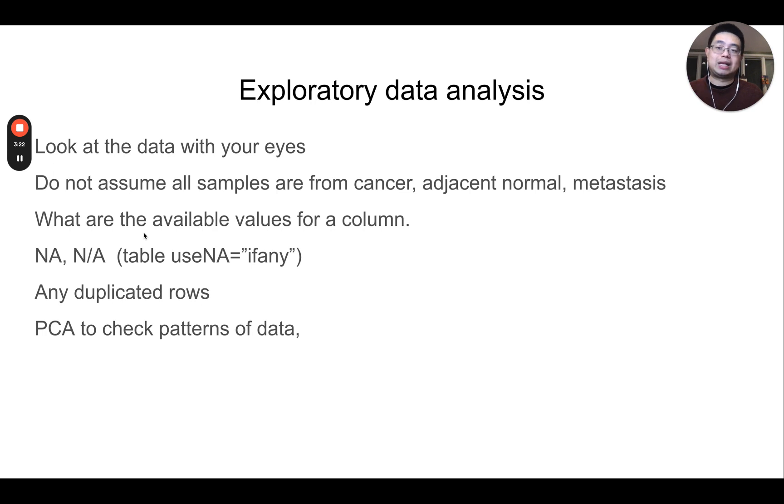That's why if this data is from a published paper, you need to read the paper, and the paper will describe what kind of data sample or tissues those samples are from. And essentially, just what are the available values for a column. You can use the table function in R to take a look. Also for those NA or not available data points, make sure you do a sanity check. Are there any duplicate rows in the data frame? You can use the distinct function to find those duplicate rows. And finally, principal component analysis, which is my favorite to check patterns of data.